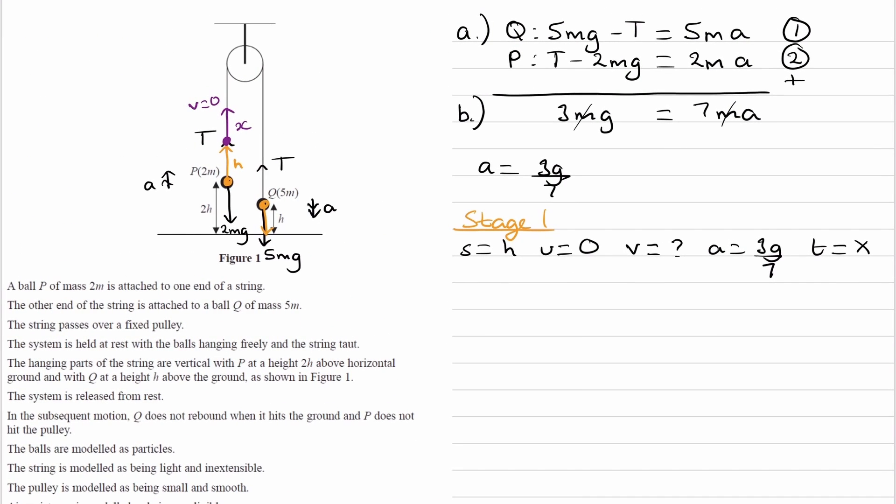So then, from this equation, we can work out what V is. We can use the equation V squared is equal to U squared plus 2AS. That's the SUVAT equation that relates these four quantities. U is zero, so V squared is then 2AS. So V is then the square root of 2 times A times S, which is the same thing as 6GH all over 7.